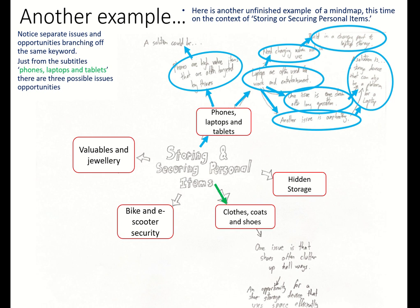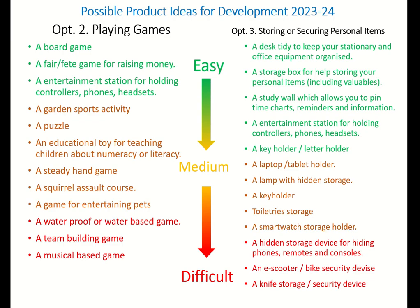This green branch at the bottom covers clothes, coats and shoes. One issue is that shoes often clutter up hallways, so there's an opportunity for a shoe storage device that uses space efficiently. Here are some more opportunities — more ideas for products. Come up with some of these as part of your mind map if you want, but don't just copy. Come up with plenty of your own.